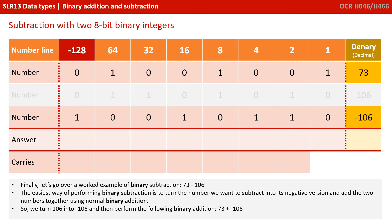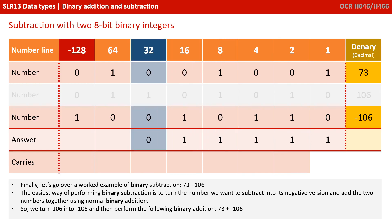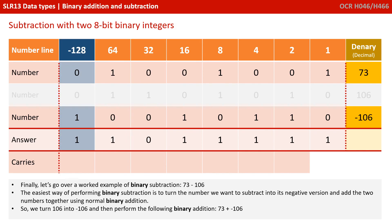We then flip all the remaining digits — 0s become 1s and 1s become 0s — and we now have negative 106. We can ignore the middle number and perform standard addition on positive 73 added to negative 106: 1 and 0 is 1; 0 and 1 is 1; 0 and 1 is 1; 1 and 0 is 1; 0 and 1 is 1; 0 and 0 is 0; 1 and 0 is 1; and 0 and 1 is 1. Note the left-hand column represents minus 128, so we have minus 128 plus 64 plus 16 plus 8 plus 4 plus 2 plus 1, ending up with minus 33.